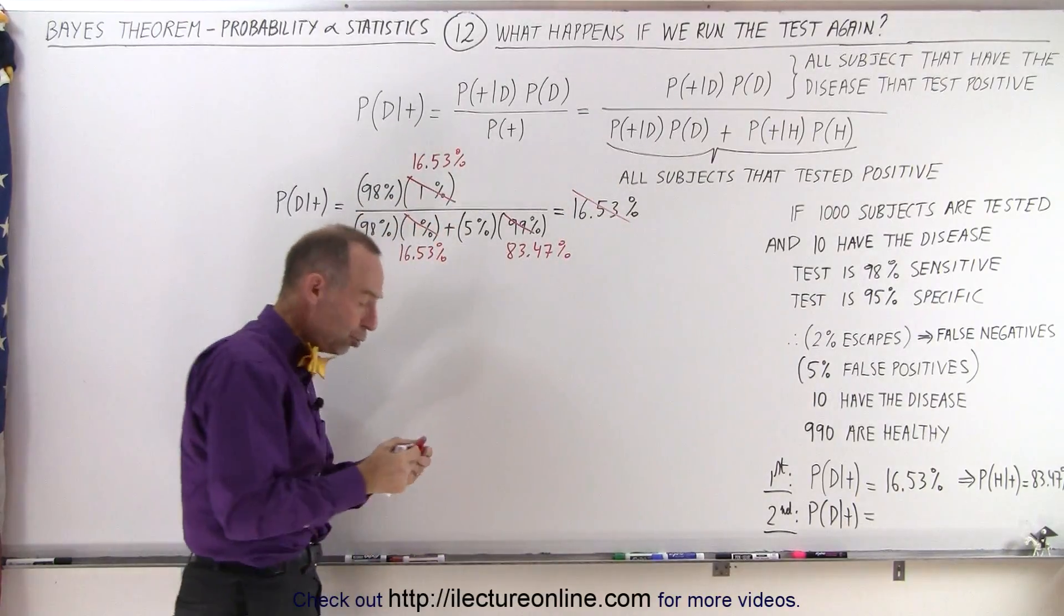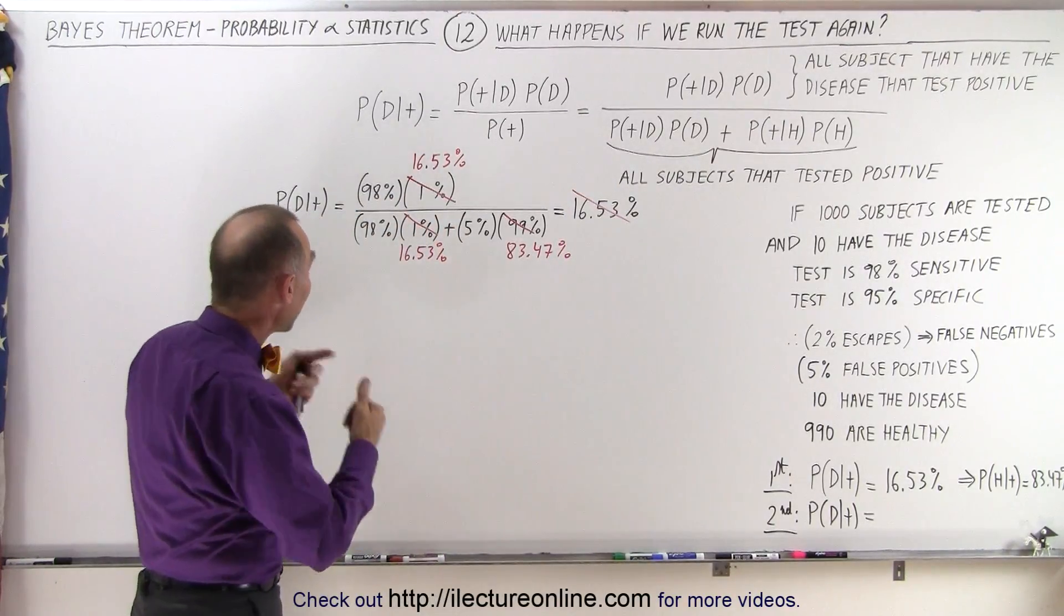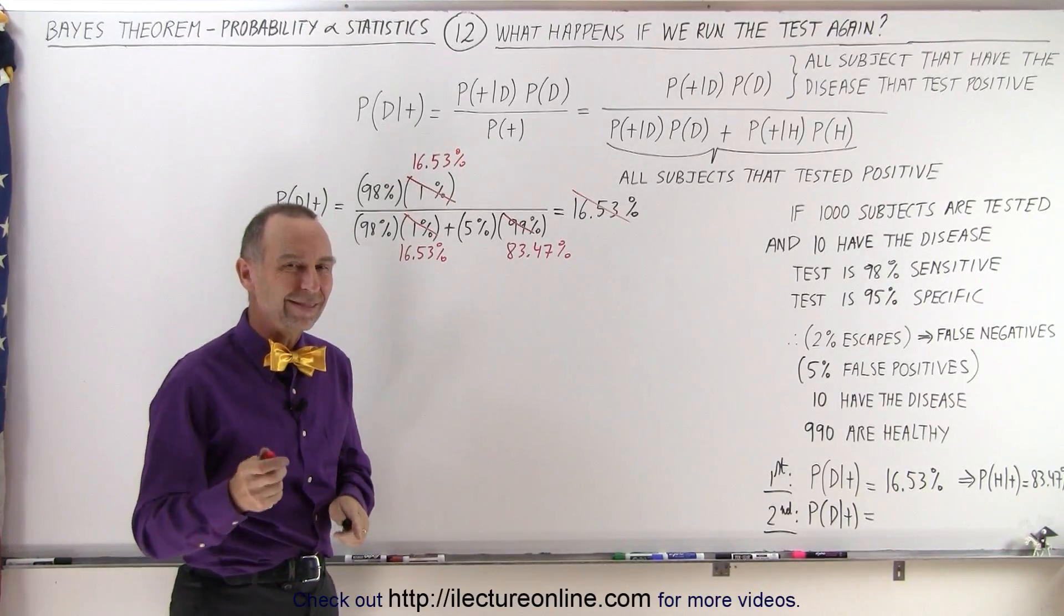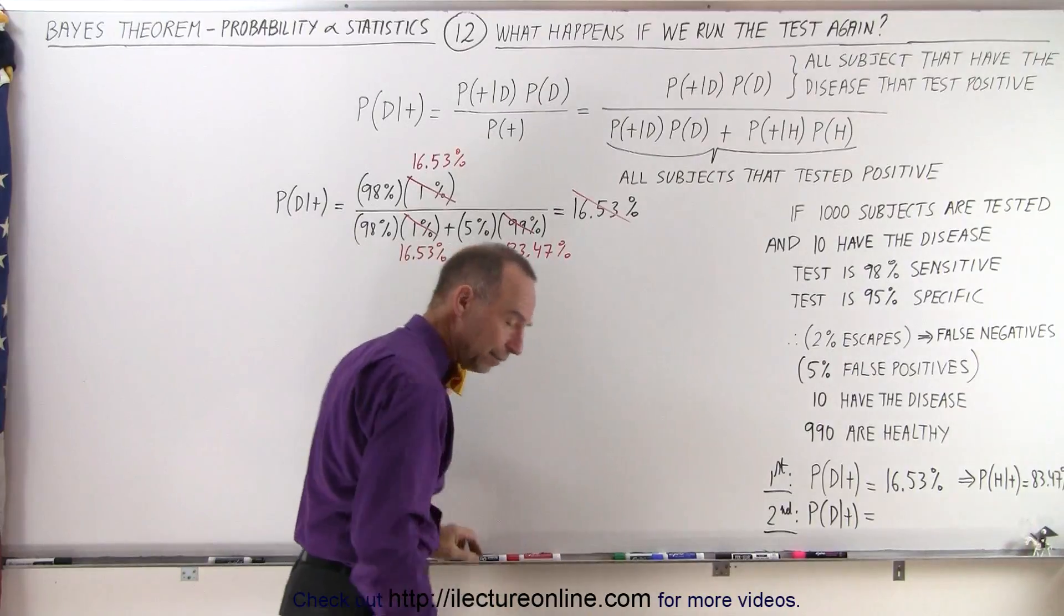And so let's see what that new probability is that you'll have the condition if you test positive based upon running the test a second time. So let's go ahead and calculate that.